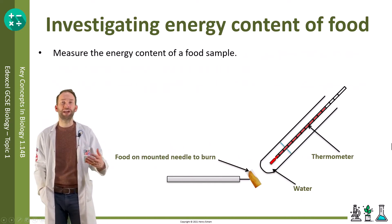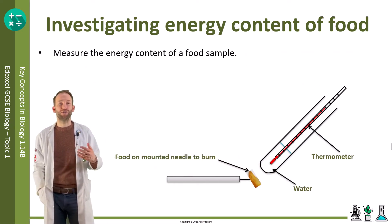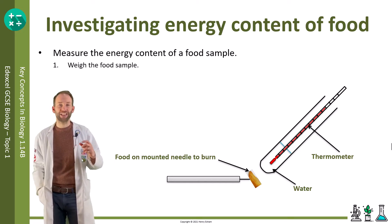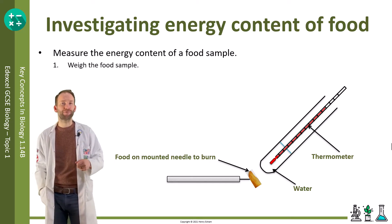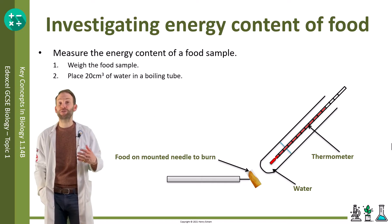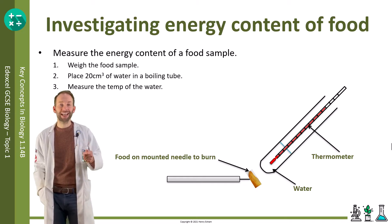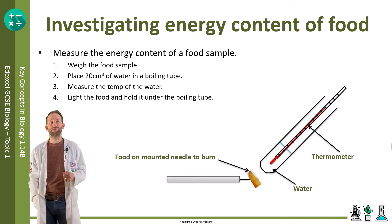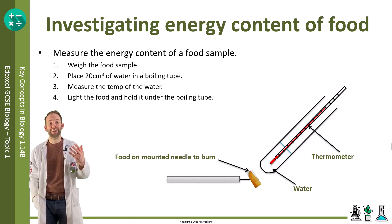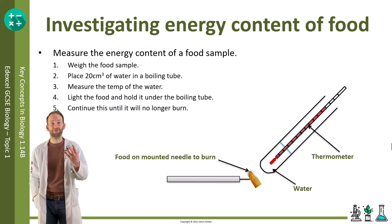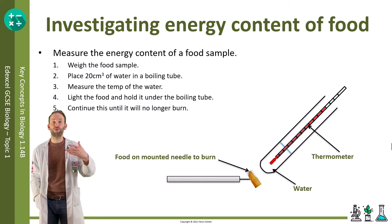A simple version of this can be done in the lab. You weigh a food sample and place it on the end of something called a mounted needle. You then put 20 centimeters cubed of water into a boiling tube and measure the temperature. Then you set fire to the food using a Bunsen burner and hold it under that boiling tube. As the food burns, all the energy gets converted to heat and some to light.